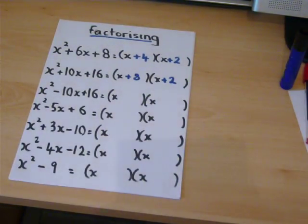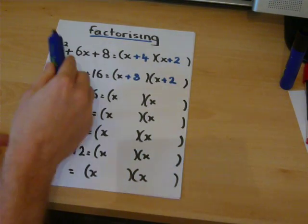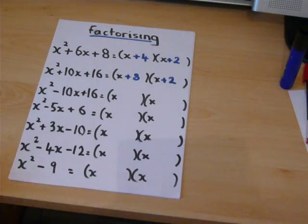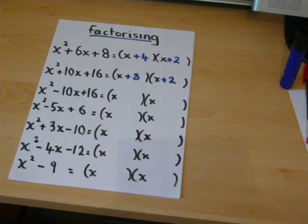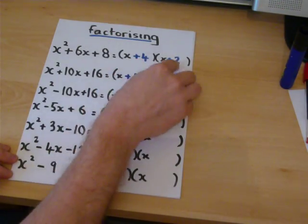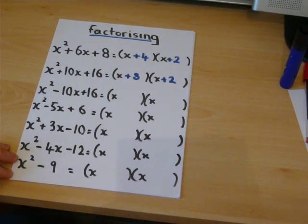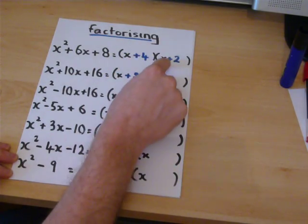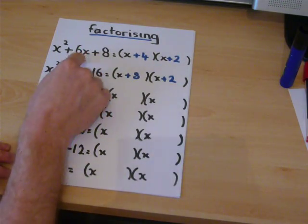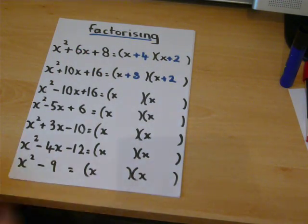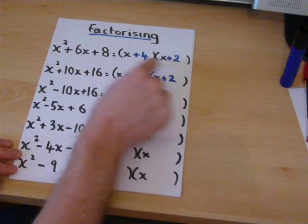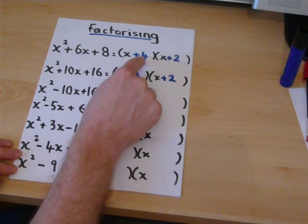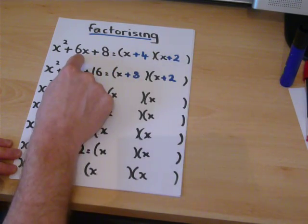With factorising, we have three terms here, and we're looking for two numbers which times to make the third number and they add to make the second number. And of course, four times two is eight, and four plus two is six.